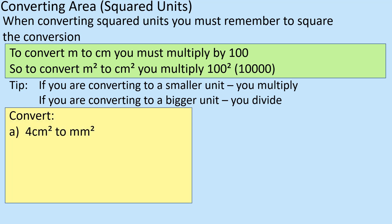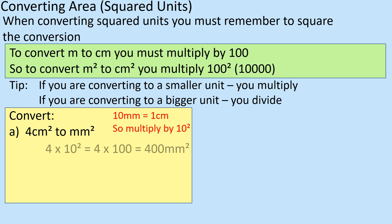So, 4 centimetres squared to millimetres squared: my unit gets smaller, so my answer must be bigger. I'm going to times it by 10 — because that's the conversion between millimetres and centimetres — twice, so times by 100. That gives 400 millimetres squared.